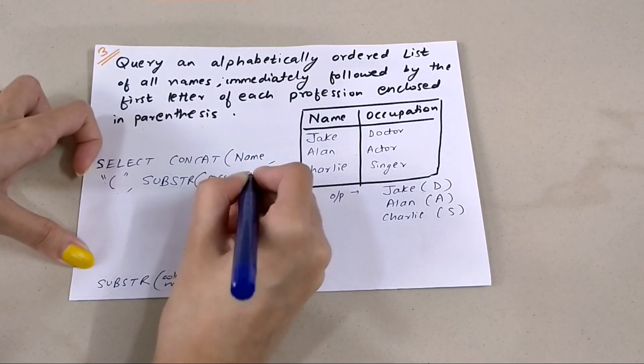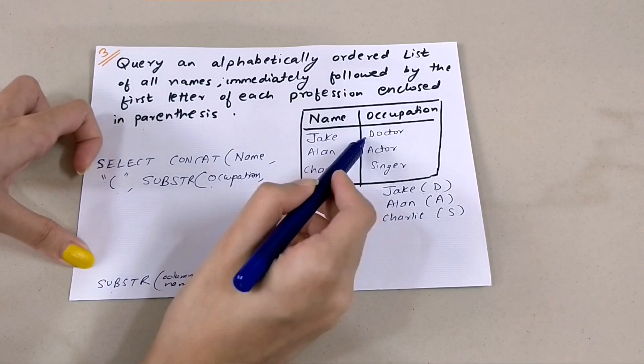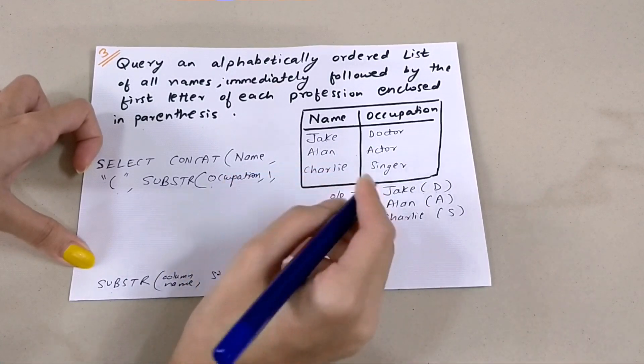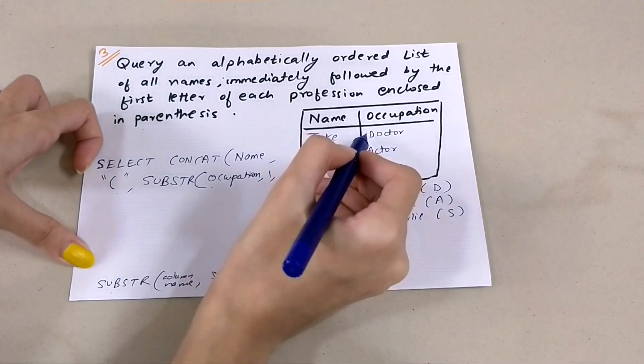And the starting index - it has to be the first letter, so the starting index will be 1. The index starts from 1 in the case of SUBSTRING. And what will be the length? One.